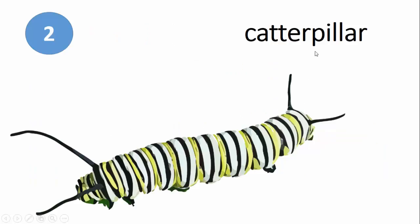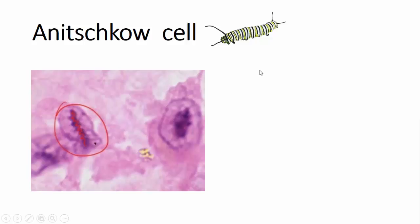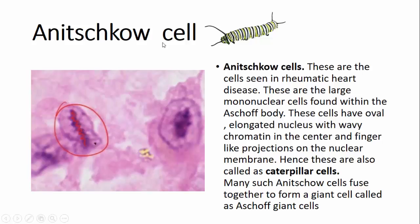The second one is the caterpillar — the nucleus of the Anitschkow cell. These cells look like a caterpillar. Anitschkow cells are large mononuclear cells found in the Aschoff body, seen in rheumatic heart disease. Aschoff bodies are nodules characteristic of rheumatic heart disease.